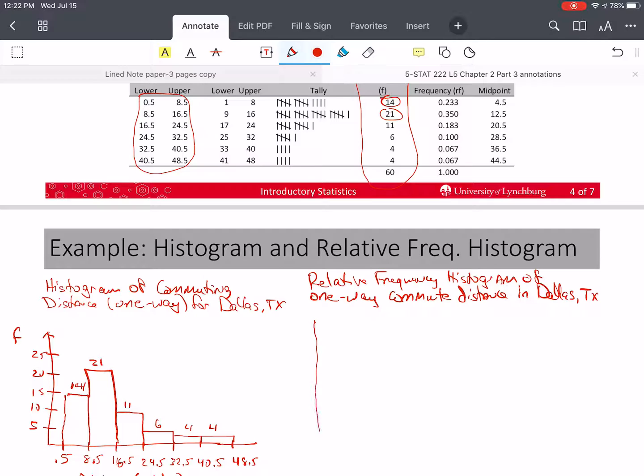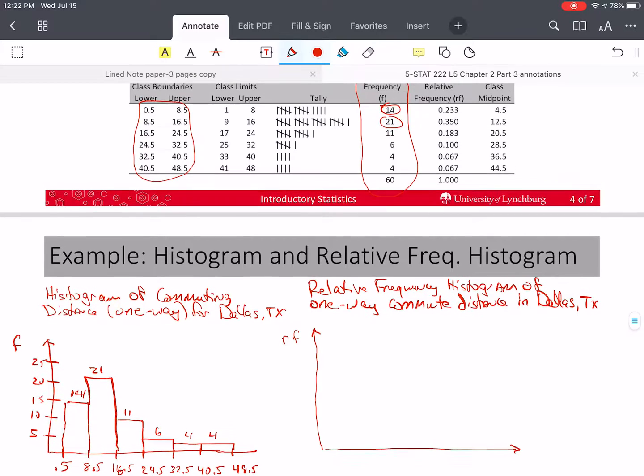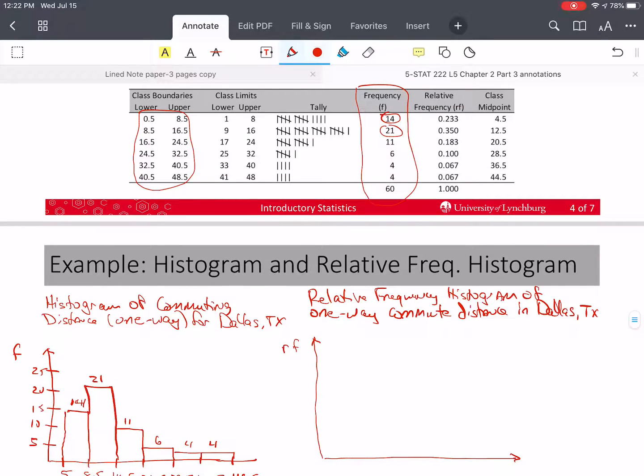So again, I need to have two axes. But this time, instead of being frequency, this is going to be relative frequency. And my scale has to be less than one. In fact, I don't even need it to go all the way to one. I just need it to go above 0.35. So I'm going to make my scale 0.1, 0.2, 0.3, and 0.4.